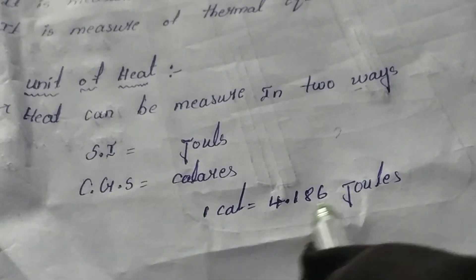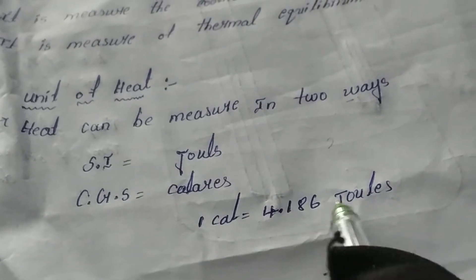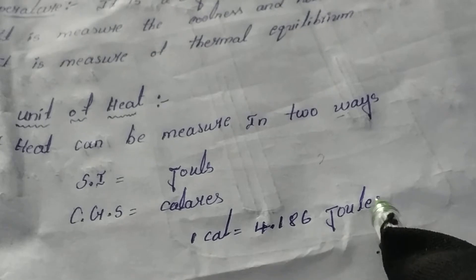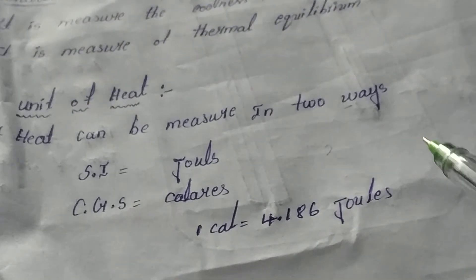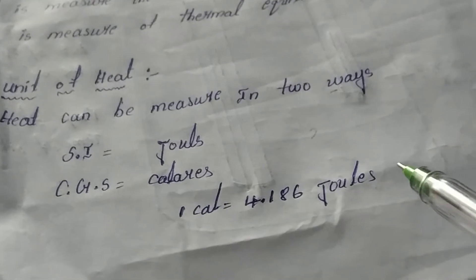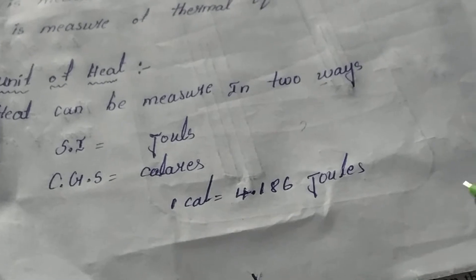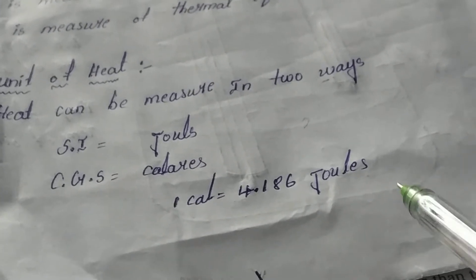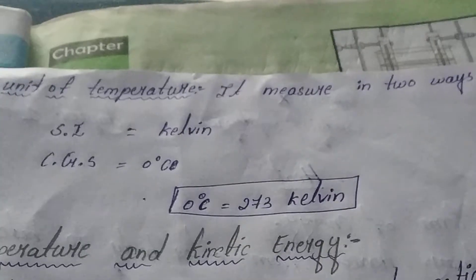There is one important relationship between Joules and calories. One calorie is equal to 4.186 Joules. With the help of this relation, if you want to convert a value from Joules to calories or calories to Joules, you multiply by 4.186.